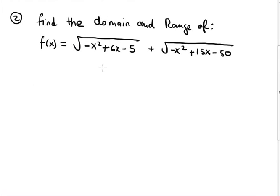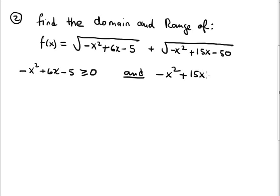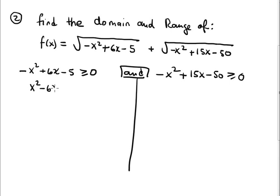Ok, find the domain of this function. We have two radicals, and the restriction obviously requires setting both radicands greater than or equal to zero: x squared plus 6x minus 5 plus p greater than or equal to 0, and negative x squared plus 15x minus 50 greater than or equal to 0. Let's solve these inequalities separately. I'm going to multiply by negative 1, giving x squared minus 6x plus 5 less than or equal to 0.